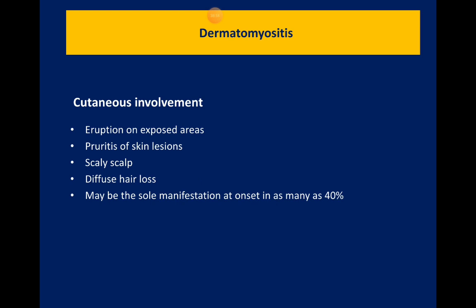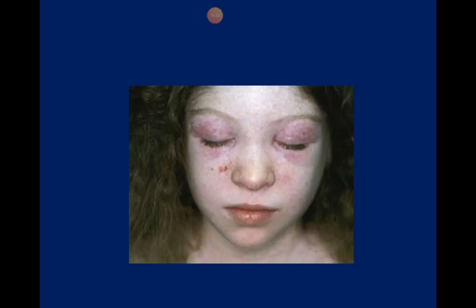Sometimes dermatomyositis can occur without myositis at the outset and may present only as an inflammatory dermatitis, which can continue purely as such or have myositis added later in time. The characteristic periorbital rash is associated with dermatomyositis. Always ask about and inquire about the use of any cosmetic products, as these can hide these signs.